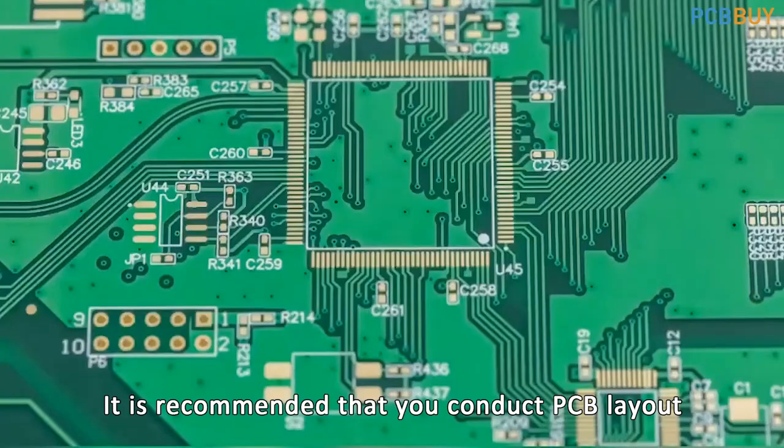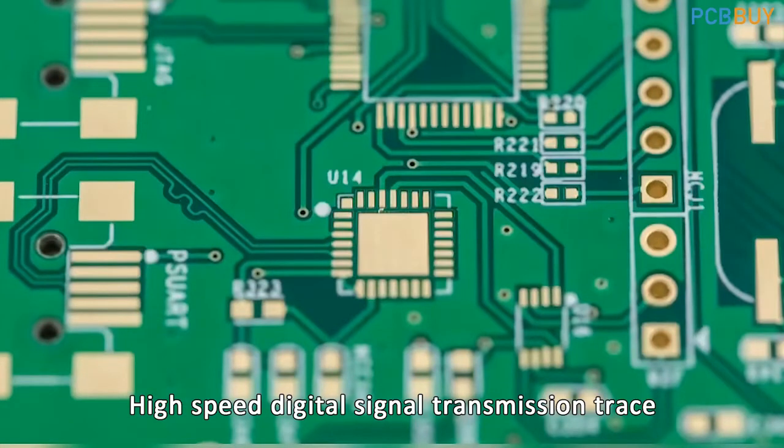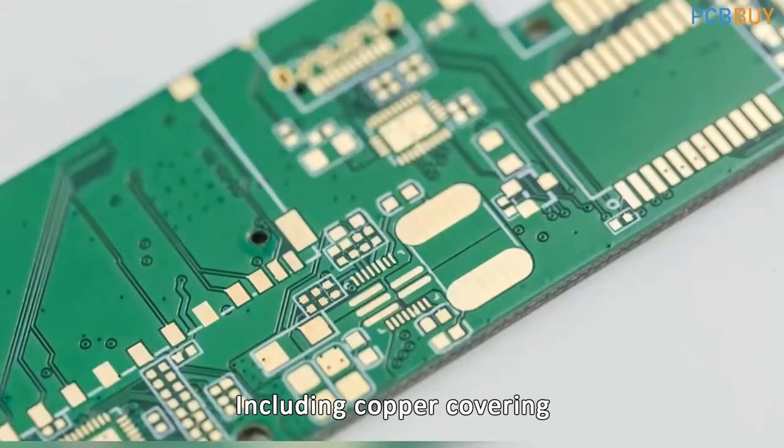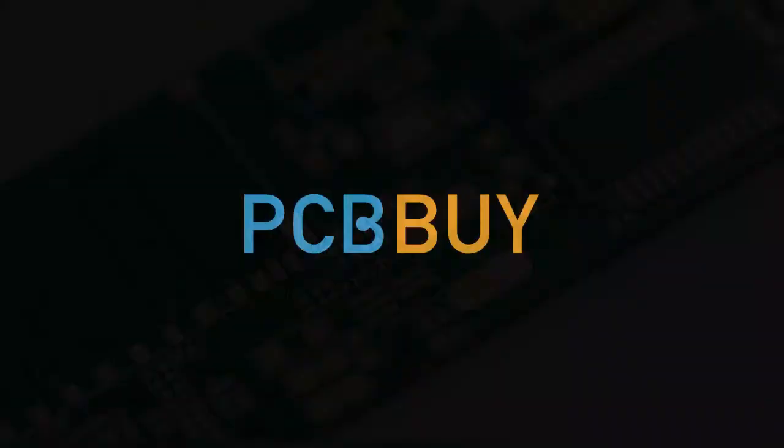On the whole, it is recommended that you conduct PCB layout to avoid right angles. Whether it's a regular signal trace, high-speed digital signal transmission trace, RF transmission trace, or copper covering, all designs should use obtuse angles.